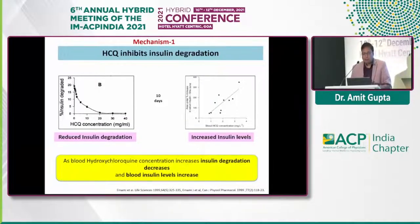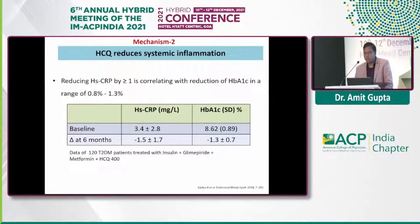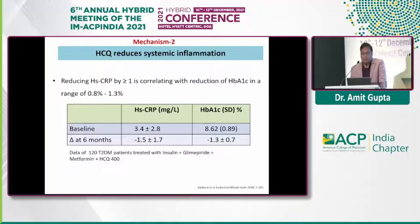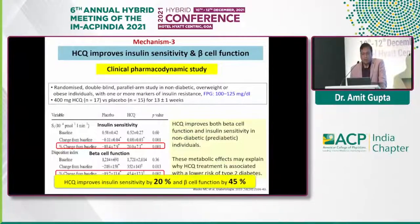As blood HCQ concentration increases, insulin degradation decreases and blood insulin levels increase. HCQ also reduces systemic inflammation — the change in hs-CRP levels from baseline shows a delta of minus 1.52 ± 1.7 at six months, and there is a corresponding reduction in HbA1c of 1.32 ± 1.7.